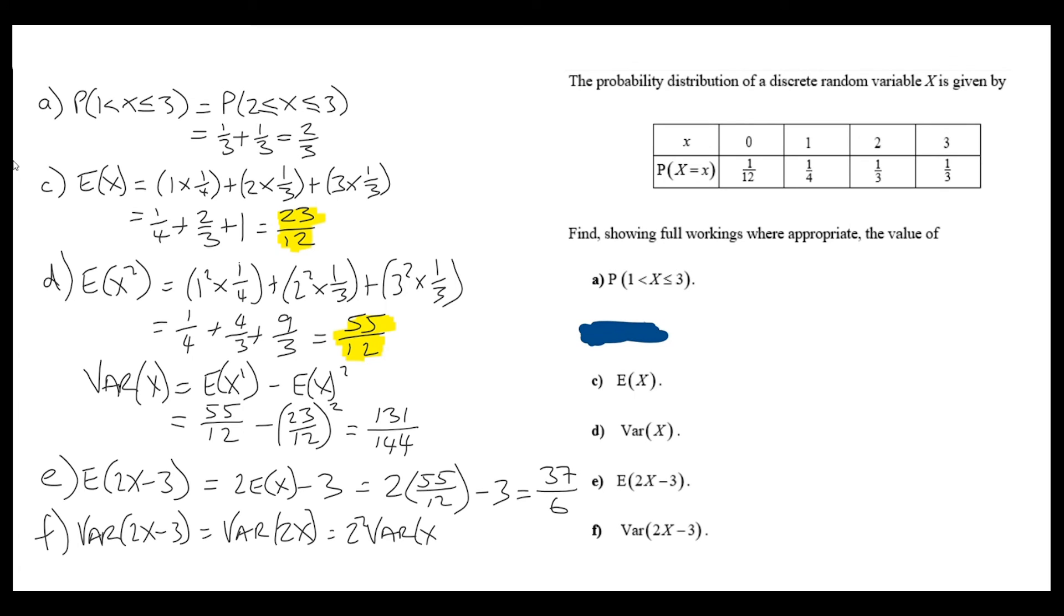Now, if we bring the two out, we're going to need to square it. So, 4 times the variance of x. That's what I'm looking for. This gives us an answer of 131 over 36.